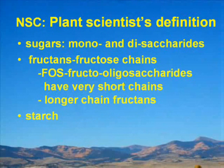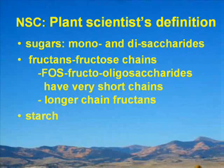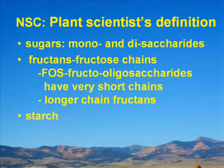If you use the plant scientists' definitions, the term sugar means mono- and disaccharides. Fructans are polysaccharides made from a backbone chain of fructose molecules. Fructooligosaccharides have chains of less than 10 sugar units long, while fructans usually refer to those with chains longer than 10 sugar units. Starch is a polysaccharide based on glucose chains.